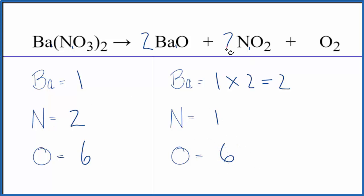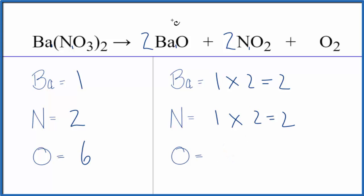Let's look at the nitrogen — we could put a coefficient of two in front of NO2, giving us two nitrogen atoms, which is good. We do need to update the oxygens though: two times one is two, two times two is four, plus the two from O2, so two plus four plus two gives us eight total oxygen atoms.